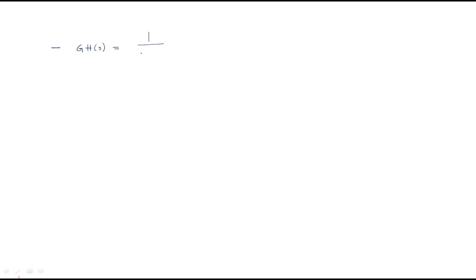Hello everyone. In this session we will compare the polar plots. Previously we discussed these, so let's recollect. The first polar plot we considered is G(s) = 1/(s+1), which has only one pole. The plot has a real and imaginary part, starting from one point and ending at another, forming this shape.